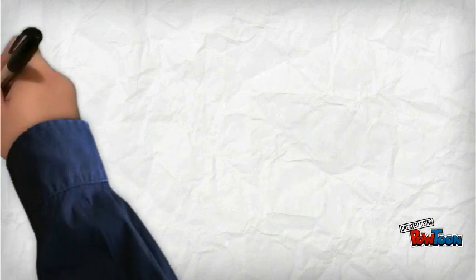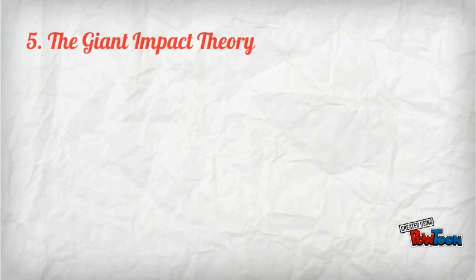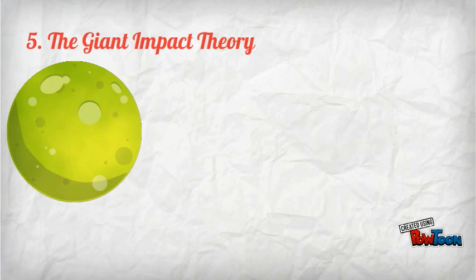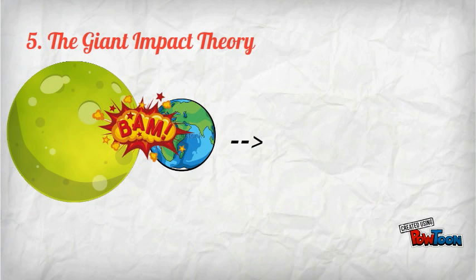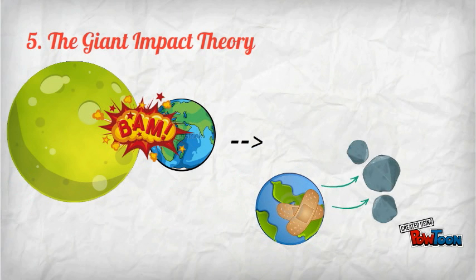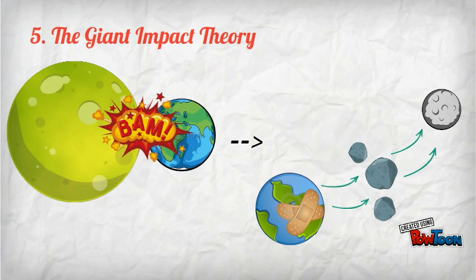The fifth theory is the Giant Impact Theory. It expects that around 4.4 billion years ago, a huge planet that was like Mars in size slammed into the newly formed Earth. The result of this collision was molten rocks came out into space and coalesced together, forming the moon.